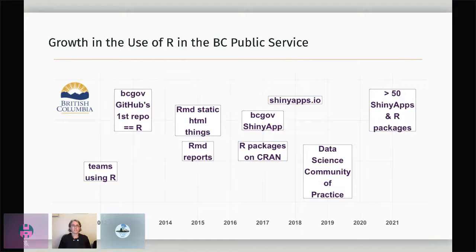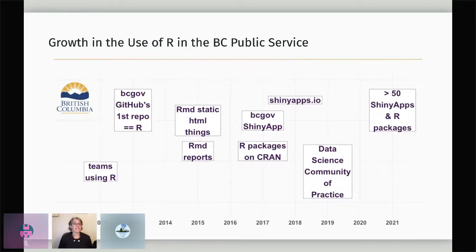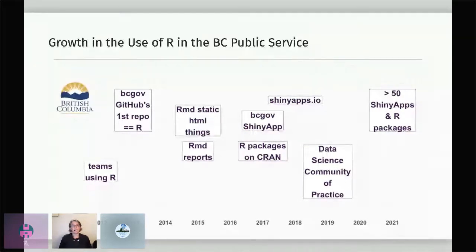The business case for taking the time to learn and change these workflows was to leverage the reproducibility and longer-term efficiencies of a programming approach. A couple of years later we started to see the use of R Markdown — first for automated reports like PDFs or Excel sheets, and also for some static HTML content that started to appear on our BC government public-facing web page. By 2017 we had our first government R package published to CRAN: tidyhydat and bcmaps, followed almost at the same time by our first BC government Shiny app published to production for public consumption.